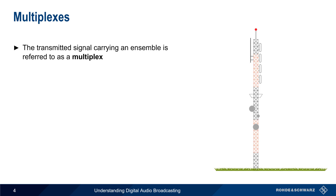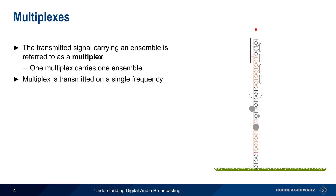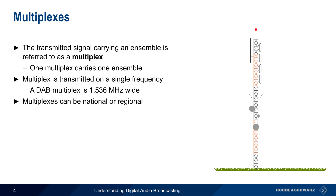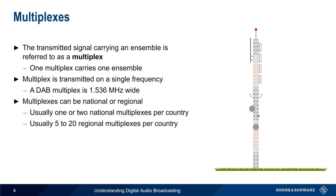An ensemble is transmitted in the form of a signal referred to as a multiplex. A single multiplex carries a single ensemble and is transmitted on a single frequency with a bandwidth of approximately 1.5 MHz. With regards to deployment, multiplexes can be either national or regional. In most European countries, there are 1 or 2 national multiplexes and 5 to 20 regional multiplexes, although this can vary significantly between countries.